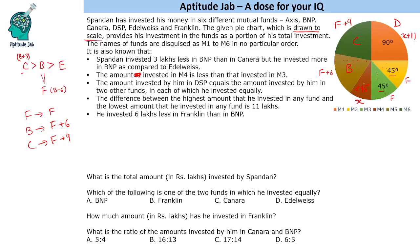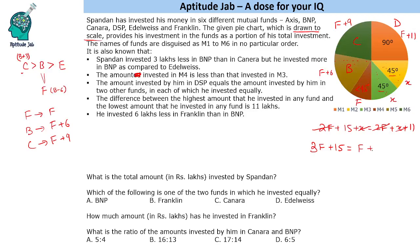We do not know one remaining value — let it be x, so the highest = x + 11. Now, this side is exactly 180 degrees and this side is also 180 degrees, so both halves must be equal. That gives us 2f + 15 + x = 2f + x + 11, which is not possible. So Franklin is not that sector — Franklin must be this other one. Now let Franklin = f and the highest = f + 11.